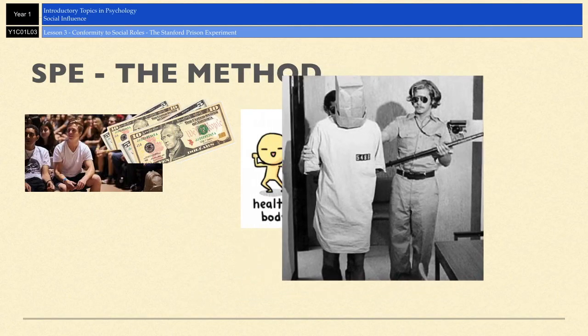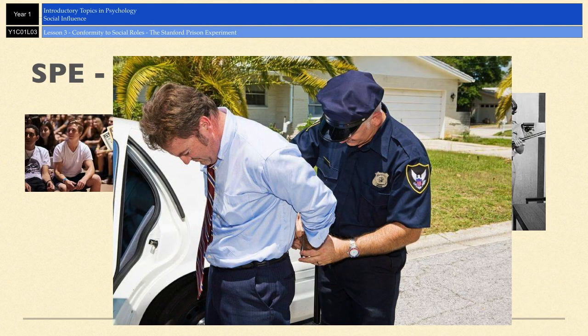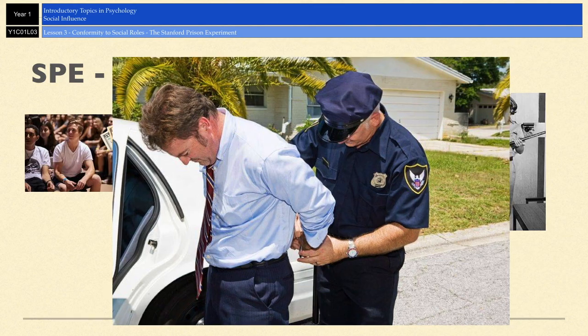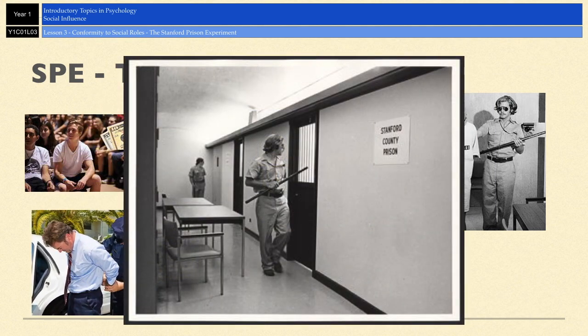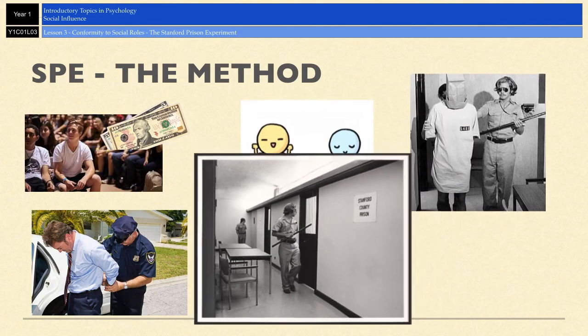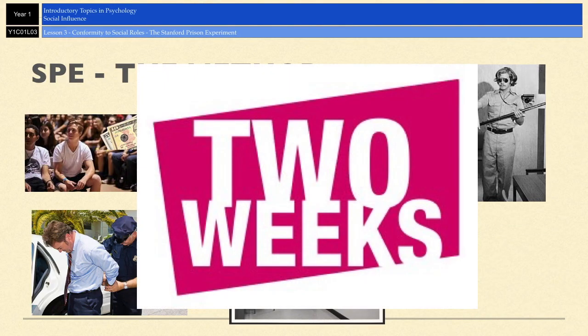Zimbardo wanted to make the study quite realistic, so he arranged for the prisoners to be arrested at their homes by real local police and fingerprinted. He also turned the basement of Stanford University into a mock prison for added realism. Interestingly, he instated himself as the warden of that prison, so he was in control of the guards and was actually inside the study himself. The whole thing was due to run for two weeks.